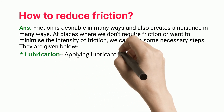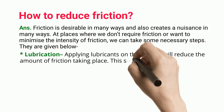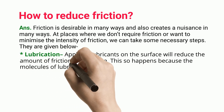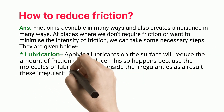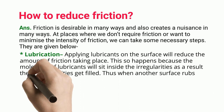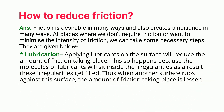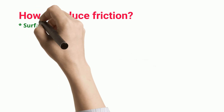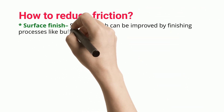Lubrication: Applying lubricants on the surface will reduce the amount of friction taking place. This happens because the molecules of lubricants sit inside the irregularities, filling them up. As a result, when another surface rubs against the surface, the amount of friction is lesser.